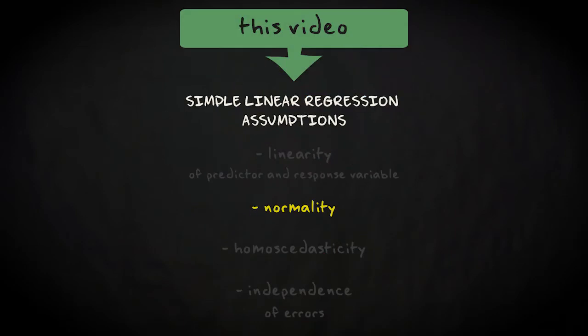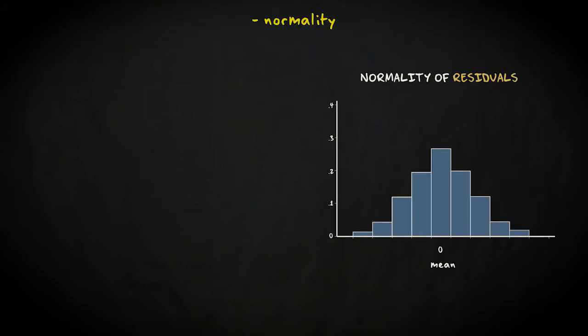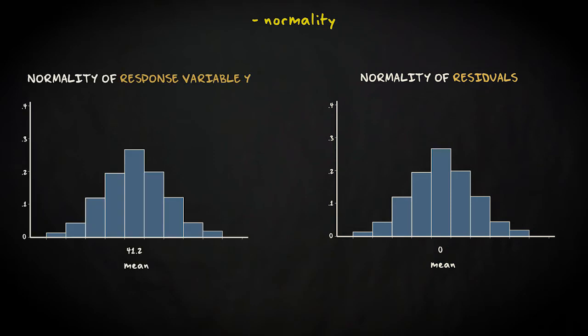The assumption of normality requires the residuals to be distributed normally. One way to check this assumption is to look at a histogram of the residuals. Remember, using ordinary least squares, we found the line that minimizes the residuals. So most residuals should be close to zero, with more extreme values being less frequent. The normality assumption is sometimes presented as pertaining to the response variable instead of the residuals, because if the response variable is distributed normally, then so are the residuals. So another way to check this assumption is to check the histogram of the response variable for normality.